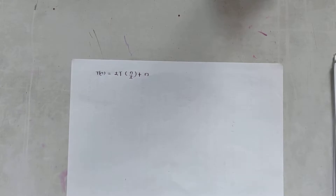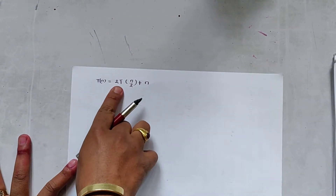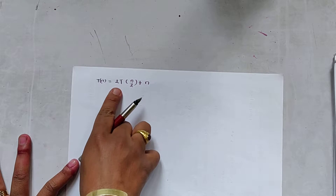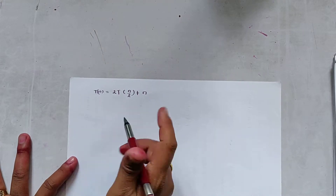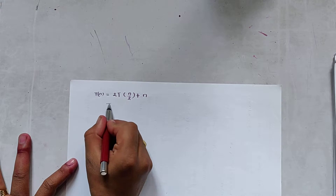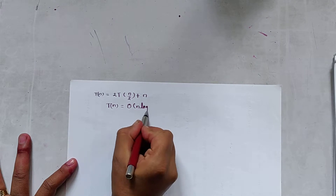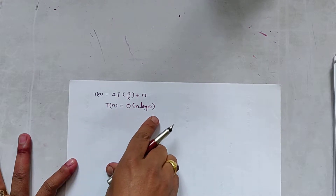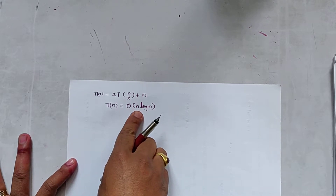Let us consider the recurrence relation T(n) = 2T(n/2) + n. Since there is a constant in front of T, that is 2 — if it is 1 we do not consider it a constant, but if it is greater than 1 we do. If there is such a constant, we suppose the time complexity as T(n) = O(n log n). If there is no constant, then T(n) = O(log n).